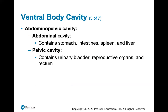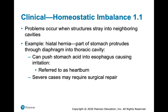Problems can occur when structures stray into neighboring cavities. An example of this is the hiatal hernia, where part of the stomach protrudes through the diaphragm into the thoracic cavity. Normally the stomach is below the diaphragm in the abdominal pelvic cavity, but if it protrudes through the opening where the esophagus passes, it can push stomach acid into the esophagus causing irritation — this is what heartburn is. A severe case may require surgical repair.